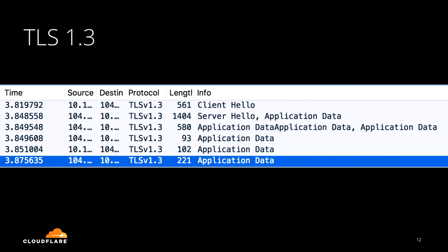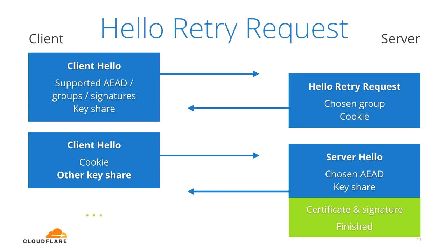This is the happy path — what happens when the prediction is correct and the server likes the client key share. If the server doesn't support the key share the client sent, it sends a polite retry request to use a different algorithm. We call that message a hello retry request. It has a cookie so it can be stateless, but essentially it falls back to a TLS 1.2-like handshake.